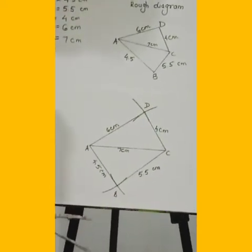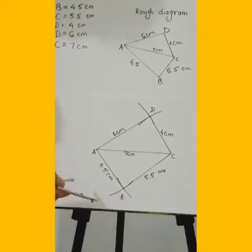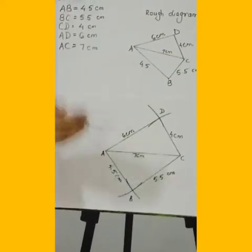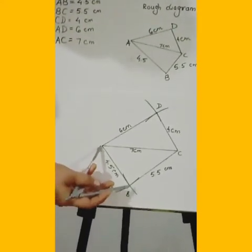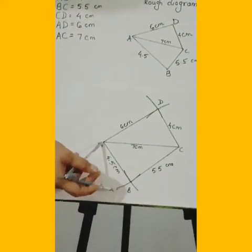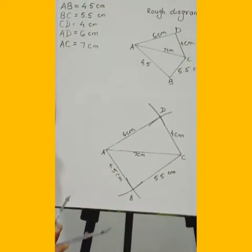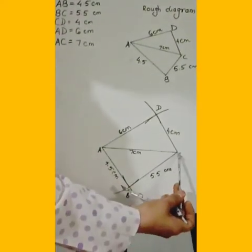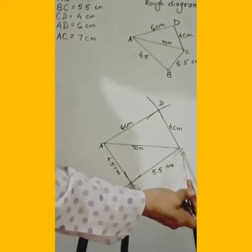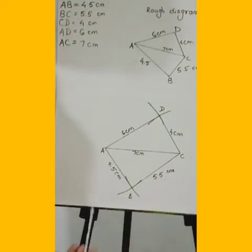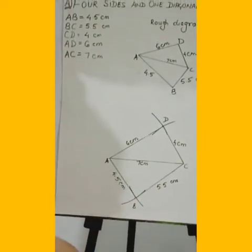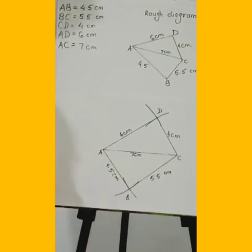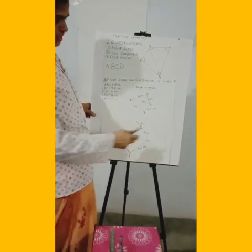Now construct the other triangle below the diagonal. Take an arc of 4.5 cm on your compass, place it at A, and draw an arc. Then measure 5.5 cm and with C as center, draw an arc so that it intersects the previous arc. Write all the measurements. The point of intersection of these two arcs is point B. Then join all the points with a scale, and your quadrilateral is constructed.